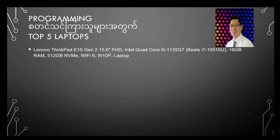Number two: IBM ThinkPad. Gen 2, Intel Quad Core i5 series. Memory is 16GB. Hard disk is 512GB.